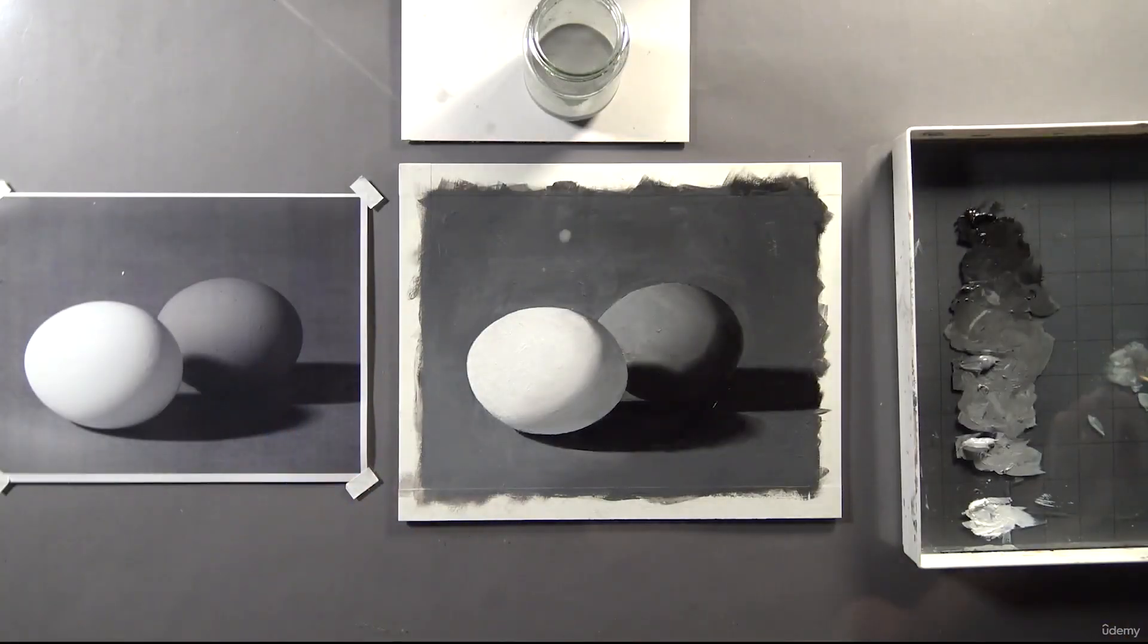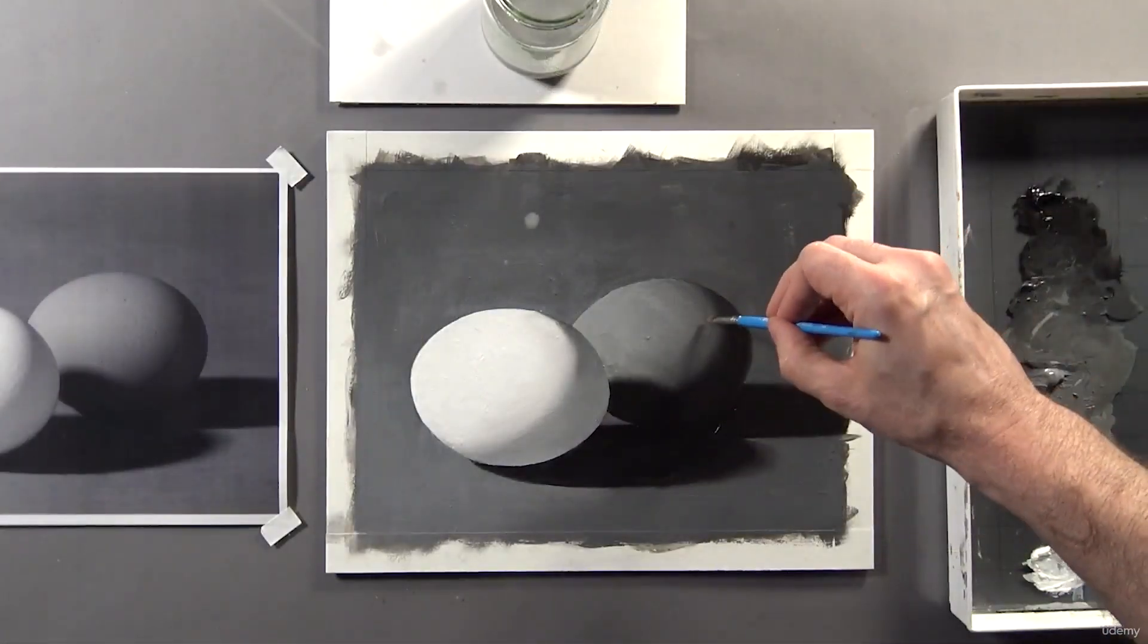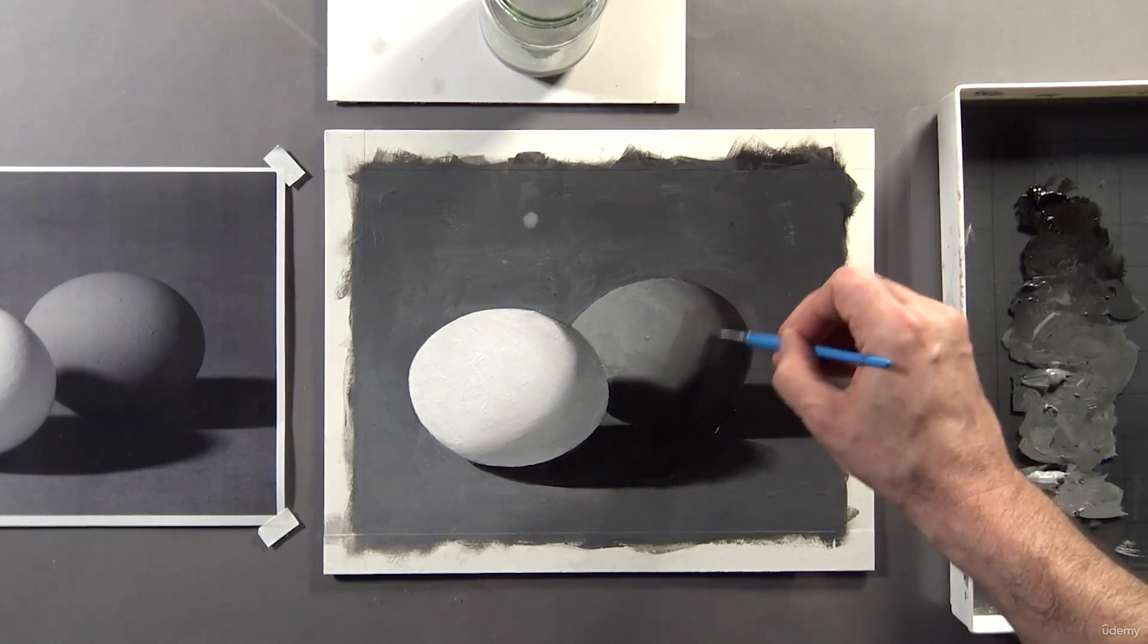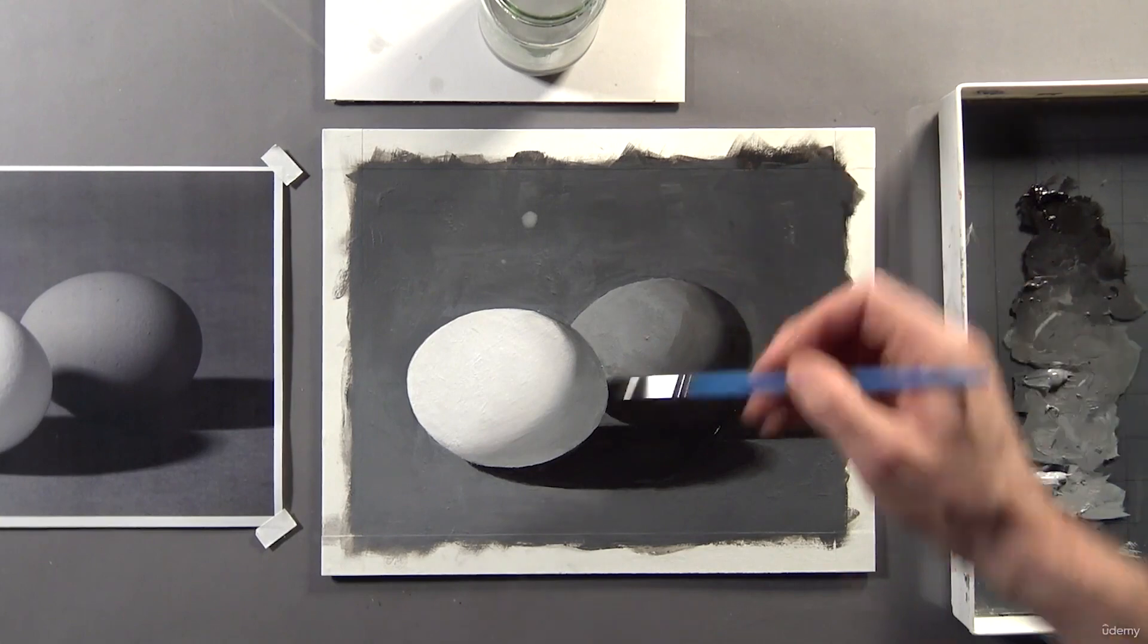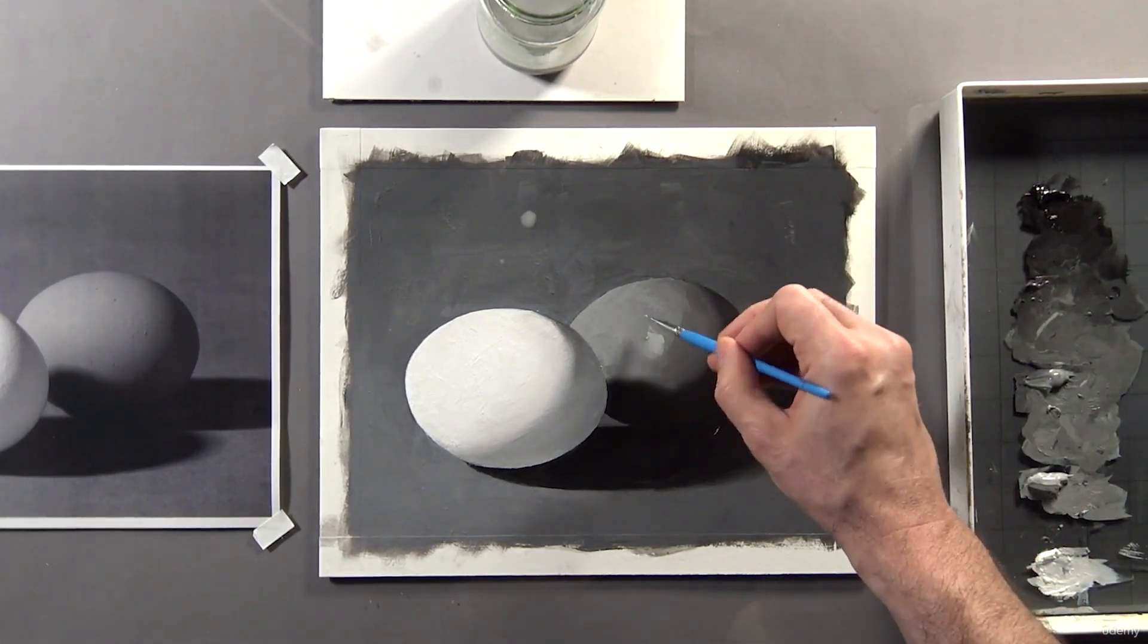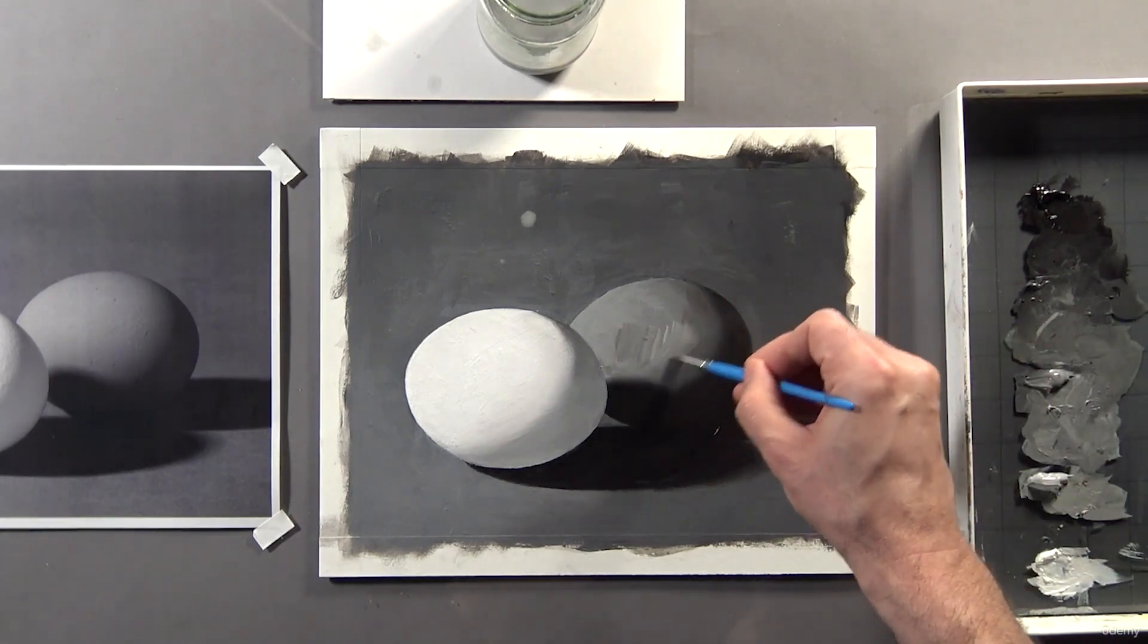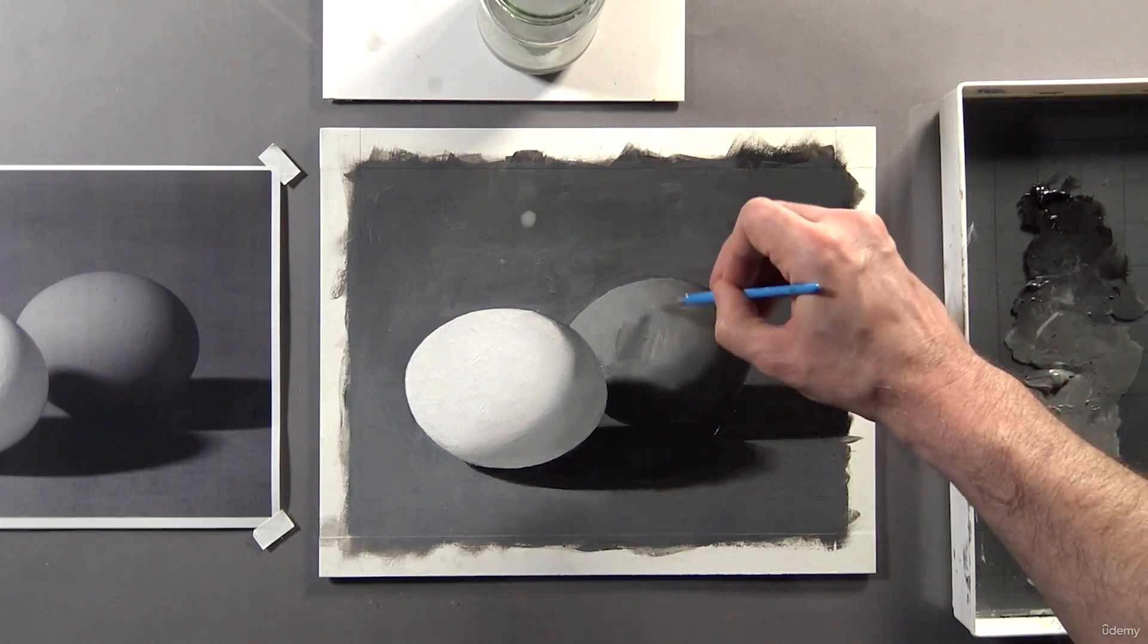This gradient still needs to be softer and a bit wider. I think that's a bit too light. I'm going to soften the shadow into the rest of the egg to avoid leaving behind any uneven blending.